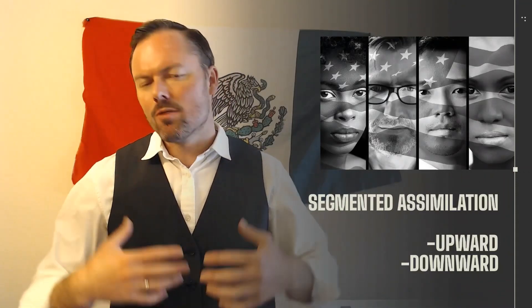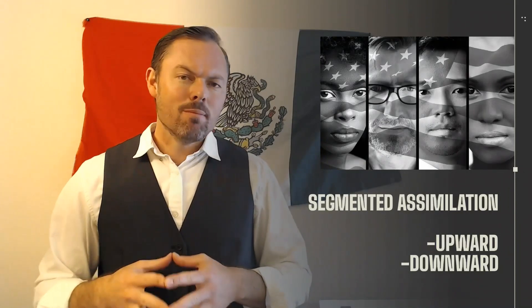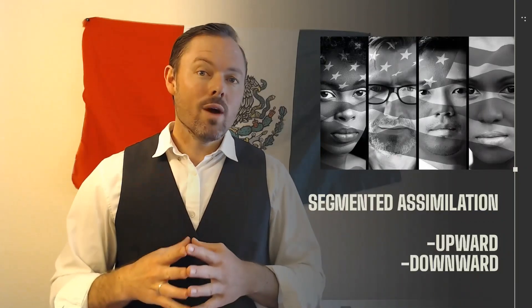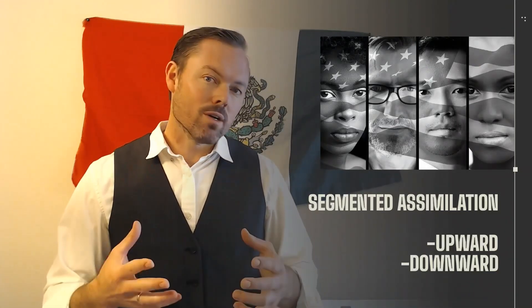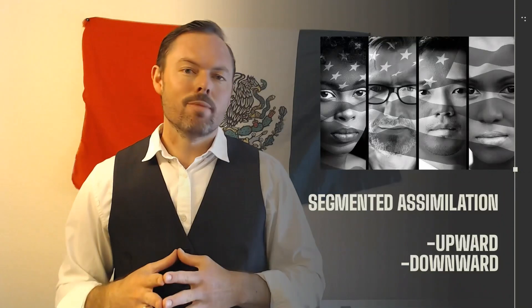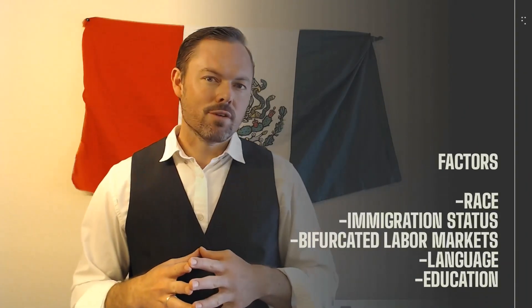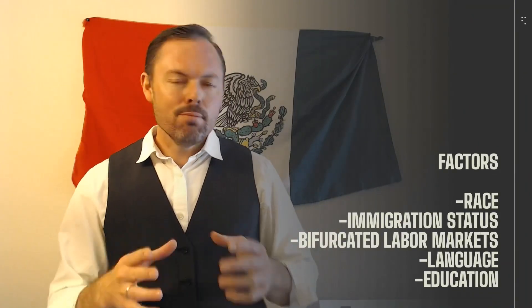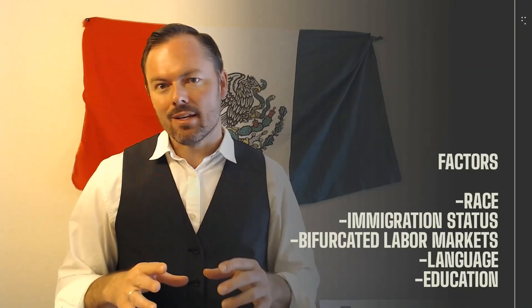Assimilation has always existed in the United States. We've always had conversations about immigrants and their ability to assimilate into society, but assimilation has never been the same for everyone. It depends a lot on whether you speak English, whether you have light skin or dark skin, whether you have the right immigration status — documented or undocumented — and whether you have access to education, healthcare, or meaningful work. All of these things influence whether you assimilate upward or downward into American society. The folks that have thought about this the most — Alejandro Portes and Ruben Rumbaut from Princeton University — have highlighted a number of factors that deeply influence one's ability to assimilate.